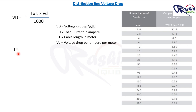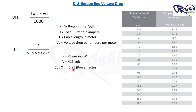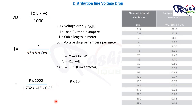Now we have to find out current I. We know I = P / (√3 × V × cos φ). This is for three phase, where P equals power in kilowatt, V equals 415 volt, and cos φ equals 0.85. We will consider 0.85 power factor. Putting all values into the formula: I = P × 1000 / (1.732 × 415 × 0.85). After solving, we get I = 1.64P. We will use this current value in our further calculation.